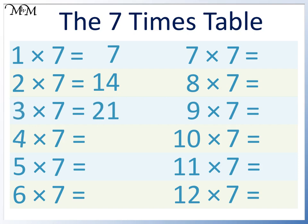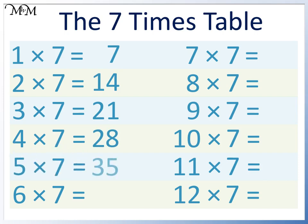To find 4 times 7, we can double 2 times 7. Doubling 14, we get 28. 5 times 7 equals 35. We can remember that we multiply by 5 and our answer ends in a 5. 6 times 7 equals 42. We can remember this since 4 plus 2 equals 6.